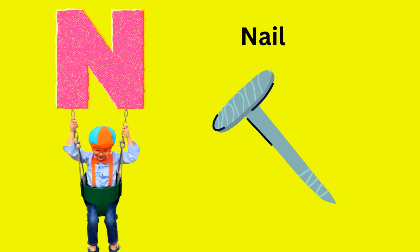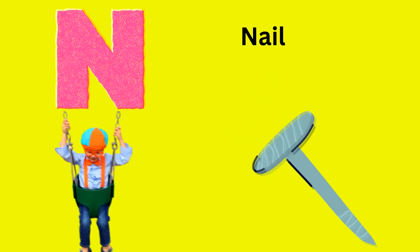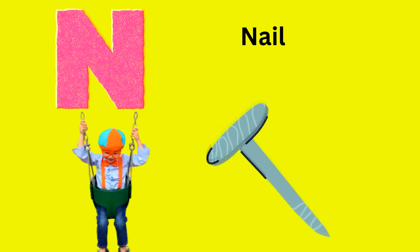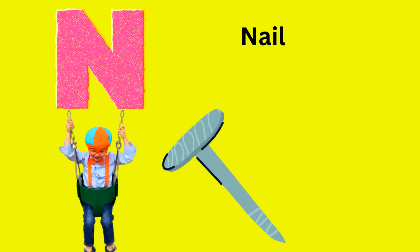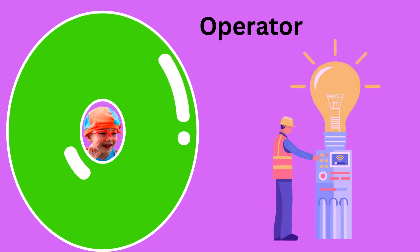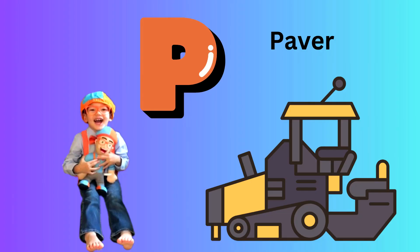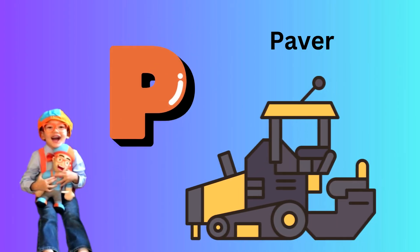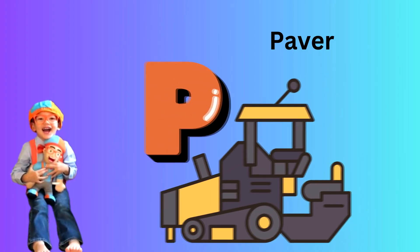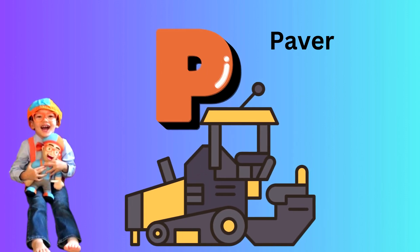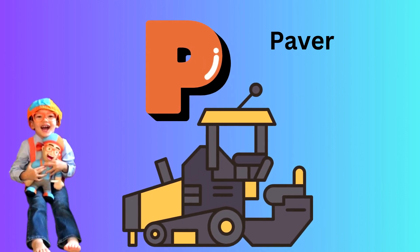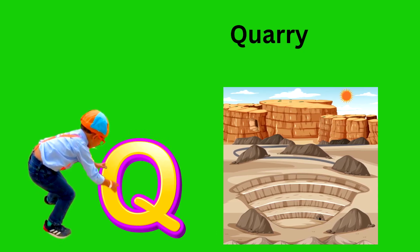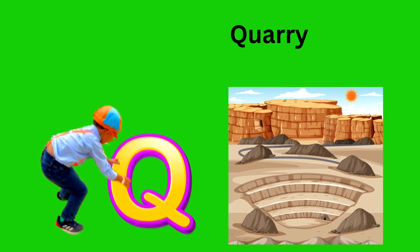N is for Nail. O is for Operator. P is for Paver. Q is for Quarry.